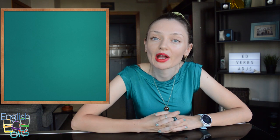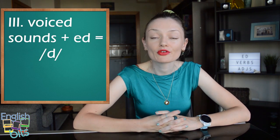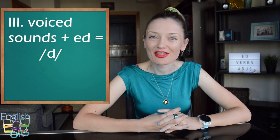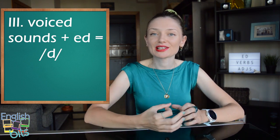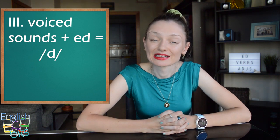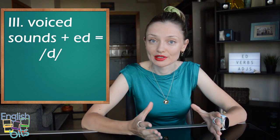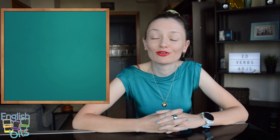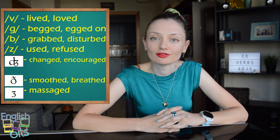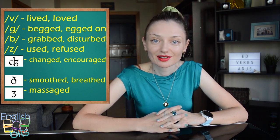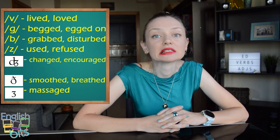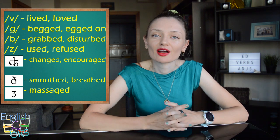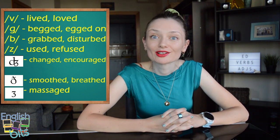And to finish, the third group: if the final sound of the infinitive is voiced — it means that there is vibration of the vocal chords — in this case, the pronunciation of ED is D. So basically, it's the rest of the sounds. Let's look at the voiced sounds. The sound V: it would be lived or loved. The same — we don't pronounce the letter E, and the final sound is D. The sound G: for example, begged or egged on.